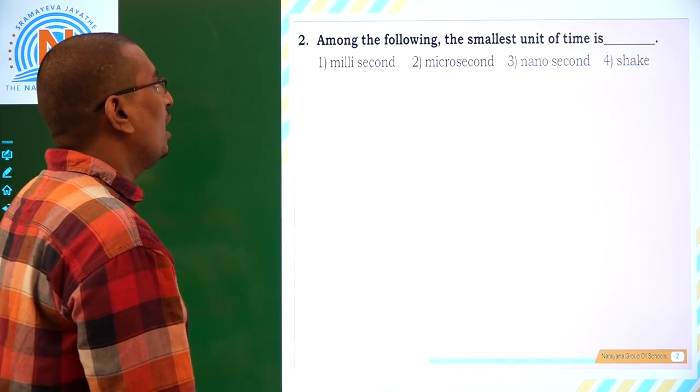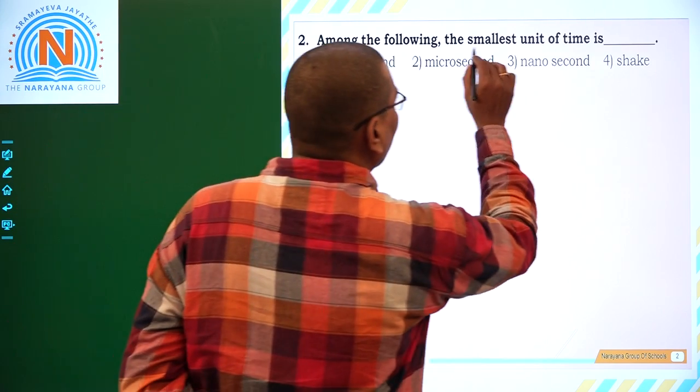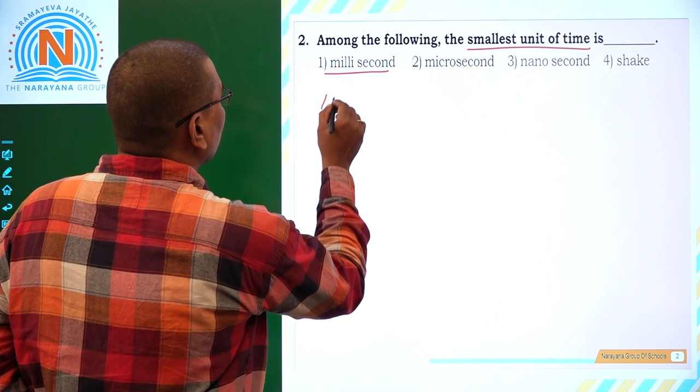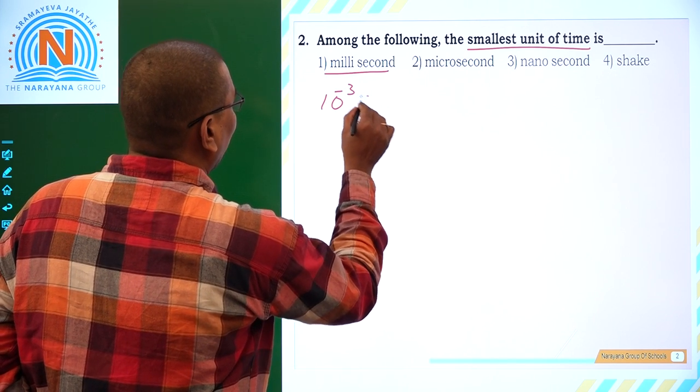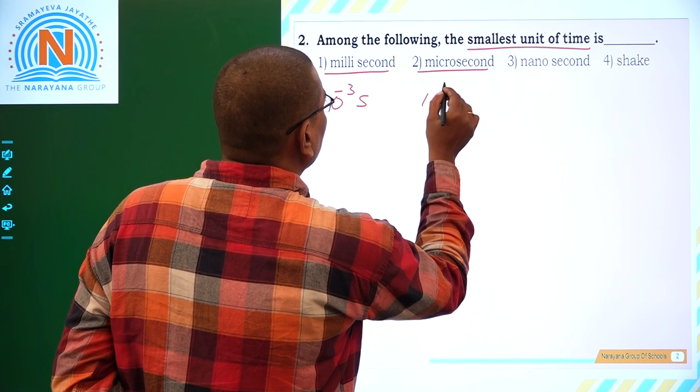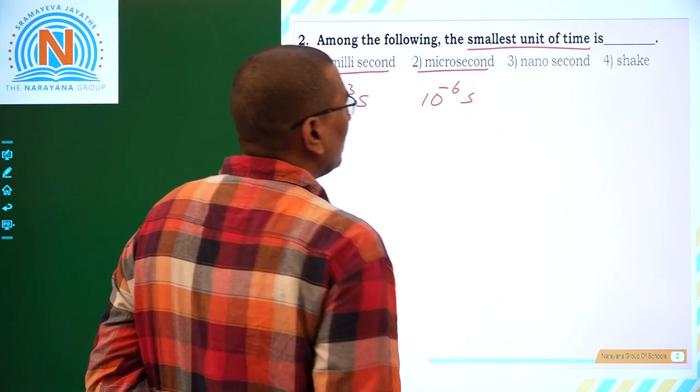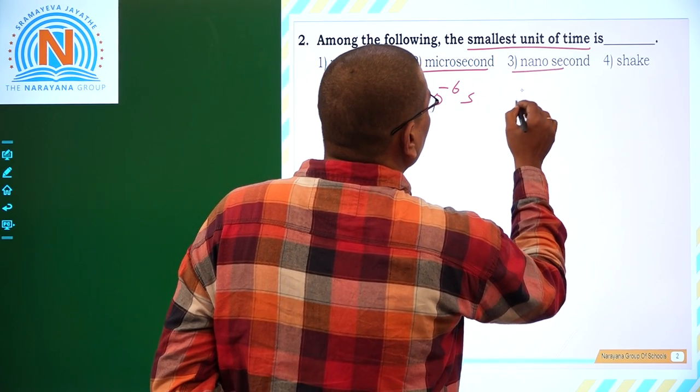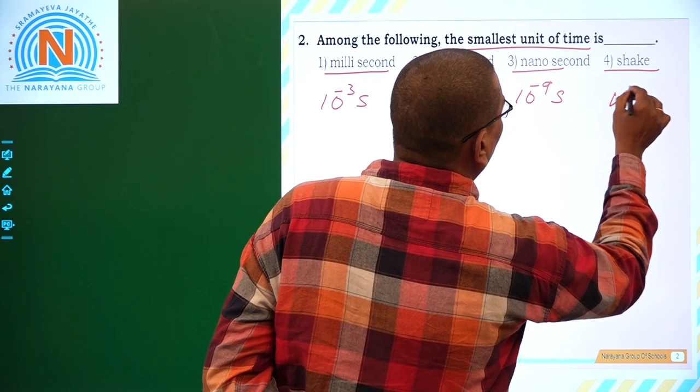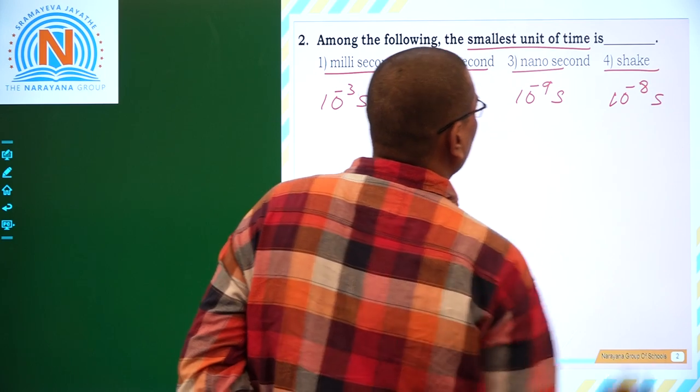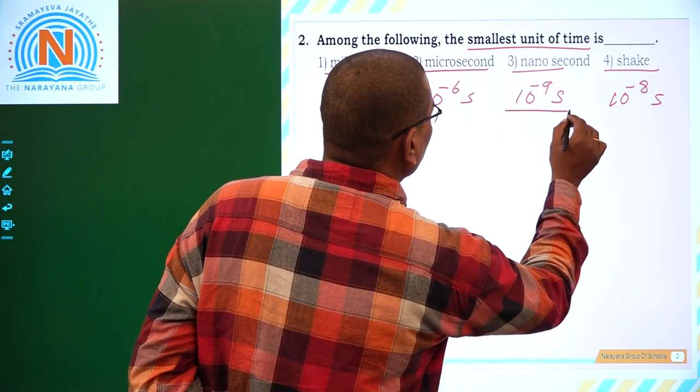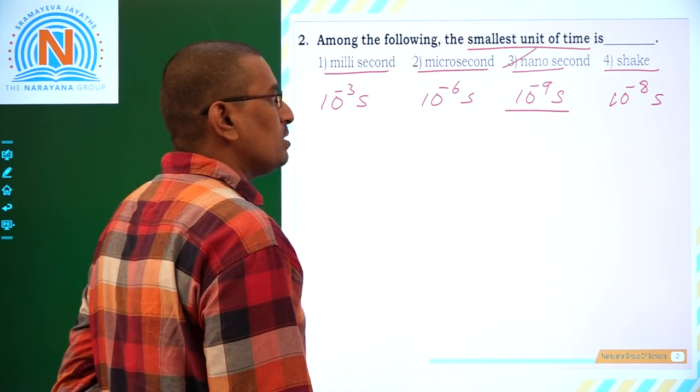Second one: Among the following, the smallest unit of time. So first option, if you see, milli is 10 power minus 3 seconds. Micro is 10 power minus 6 seconds. Nano is 10 power minus 9 seconds. And share is 10 power minus 8 seconds. So among the following, the smallest is 10 power minus 9 seconds, which is nanosecond, our option.